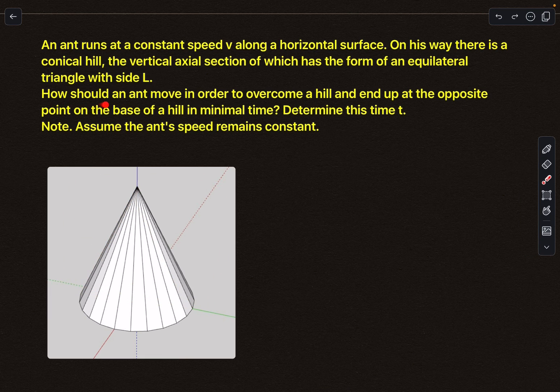Now the question is: how should an ant move in order to overcome the hill and end up at the opposite point on the base of the hill in minimum time? Let's say the ant starts from this red point. The ant wants to reach the red point on the other side of the cone, which from the top view, if this is point number one, then this is point number two. We need to find the minimum time in which the ant can reach that particular point.